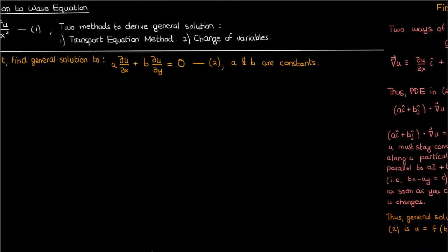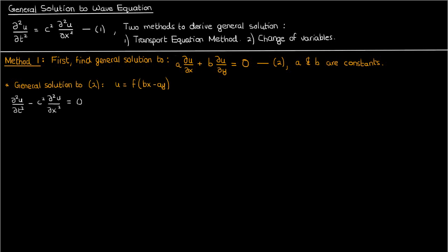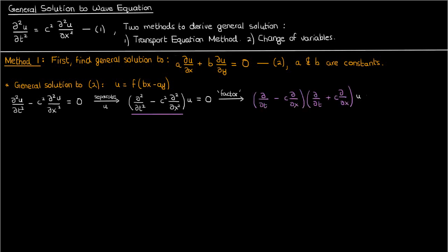Now let's go back to the main part of the blackboard to derive the general solution to the wave equation. We just showed that the general solution to a times partial u partial x plus b times partial u partial y equals 0 is f of bx minus ay. We start by shifting everything to one side of the wave equation, then separate u from its operators and factor the operator expression — using air quotes around 'factor.' I'll call this factored expression equation 3.